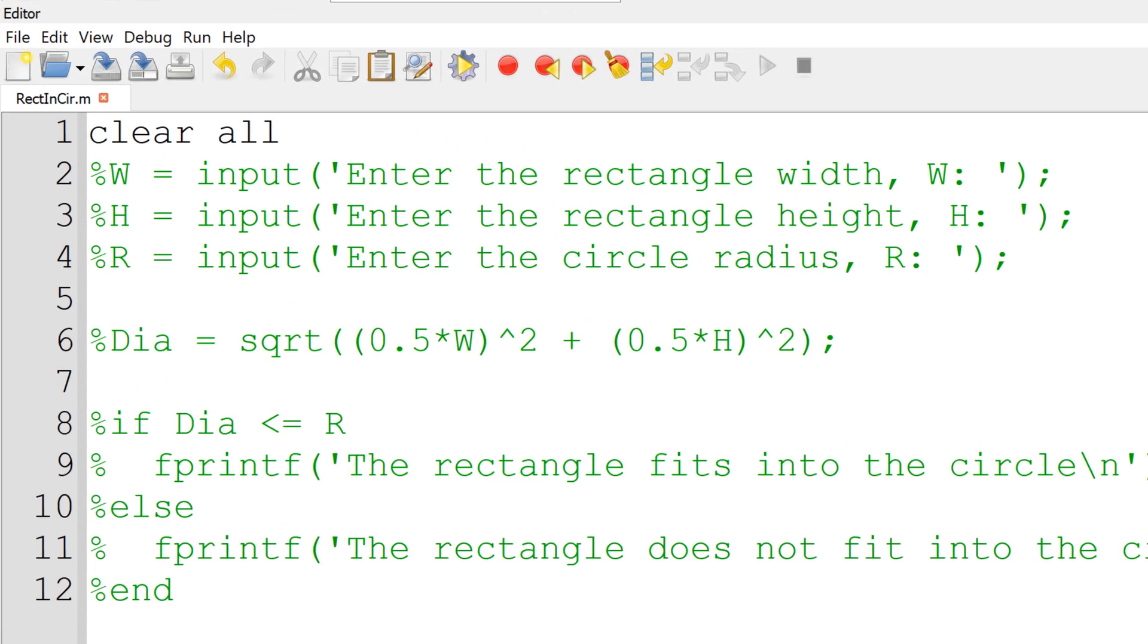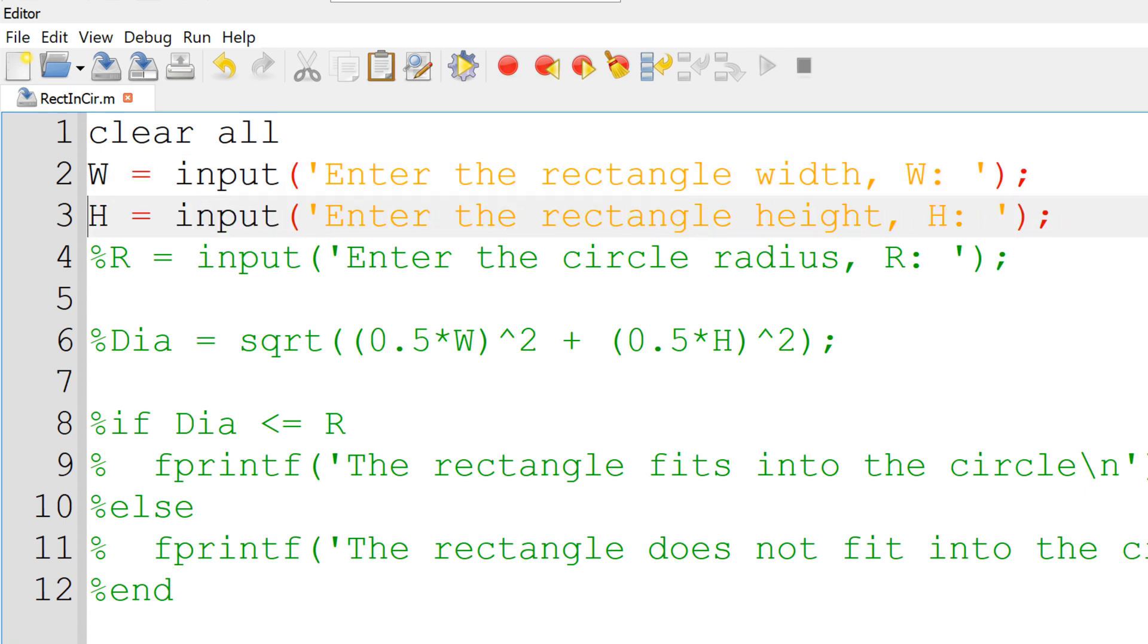In the text editor, I would start with clear all to remove all existing variables before we begin. Then we need to receive three inputs from users: W, H, and R. I will use input function with the proper text and the variables W, H, and R.